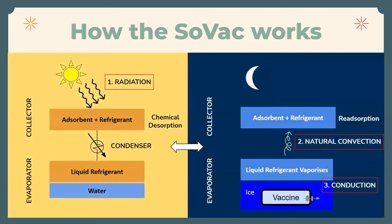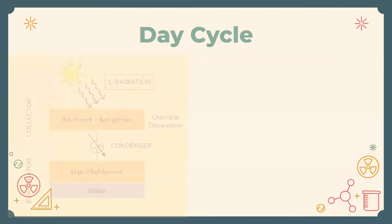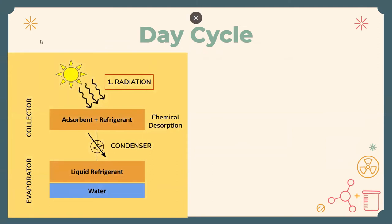Diving into how SOVAC works, it works in two cycles: day and night. During the day, radiation from the sun is incident on the collector plate. It heats up the refrigerant which vaporizes, goes to the condenser, and then turns back into liquid refrigerant and is stored eventually in the evaporator.